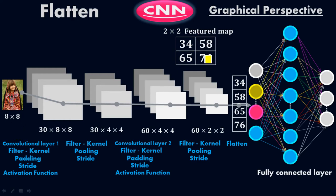In CNN, you may not want all the features of the image, so you extract only the important features to save time, memory space, and processing cost. That is why we reduce the dimension.